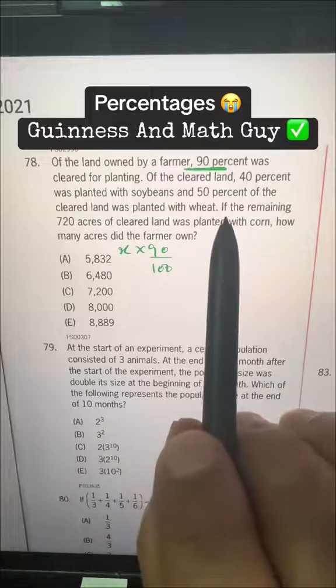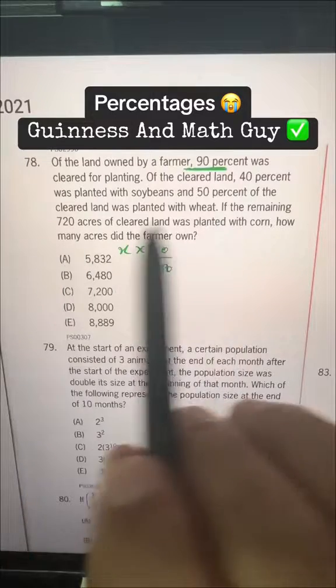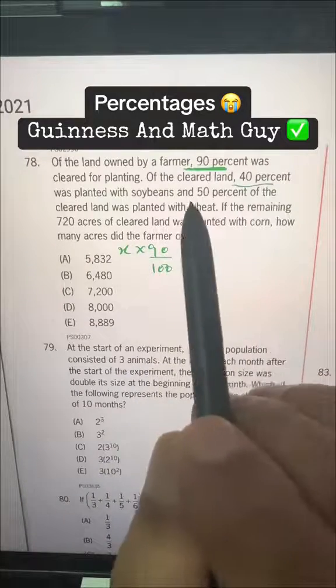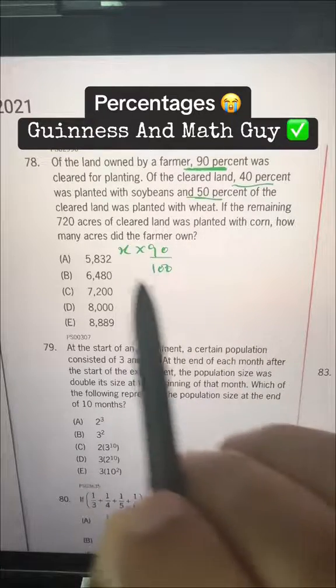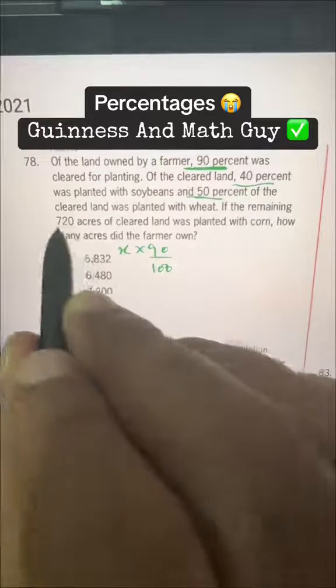And what she is asking, if the remaining 720, so after planting these two, the remaining 10% of this land, cleared land, is 720.